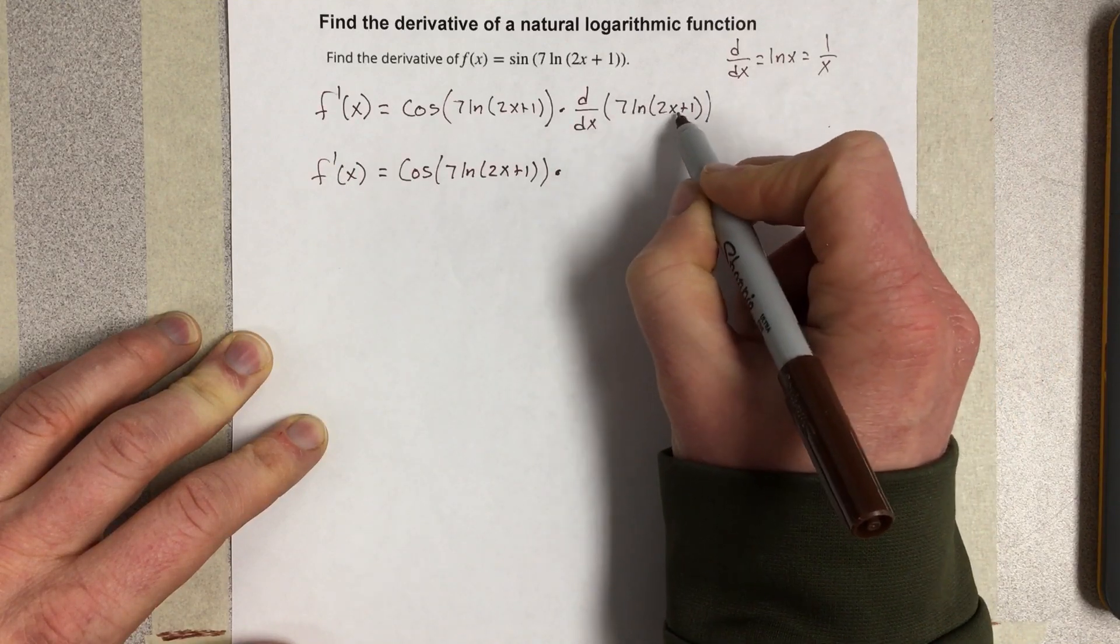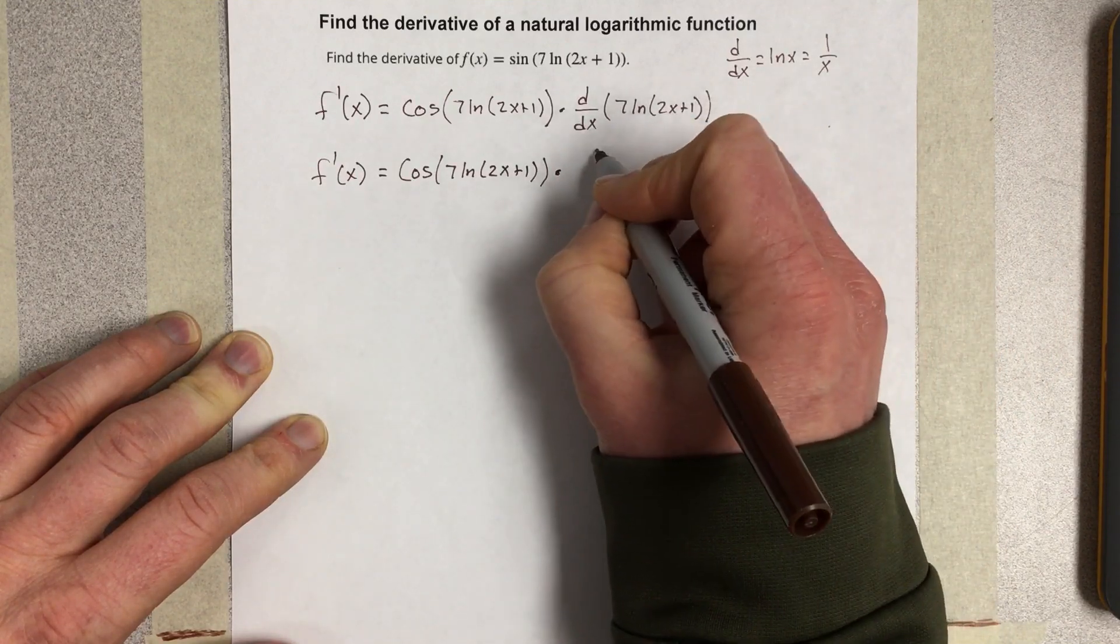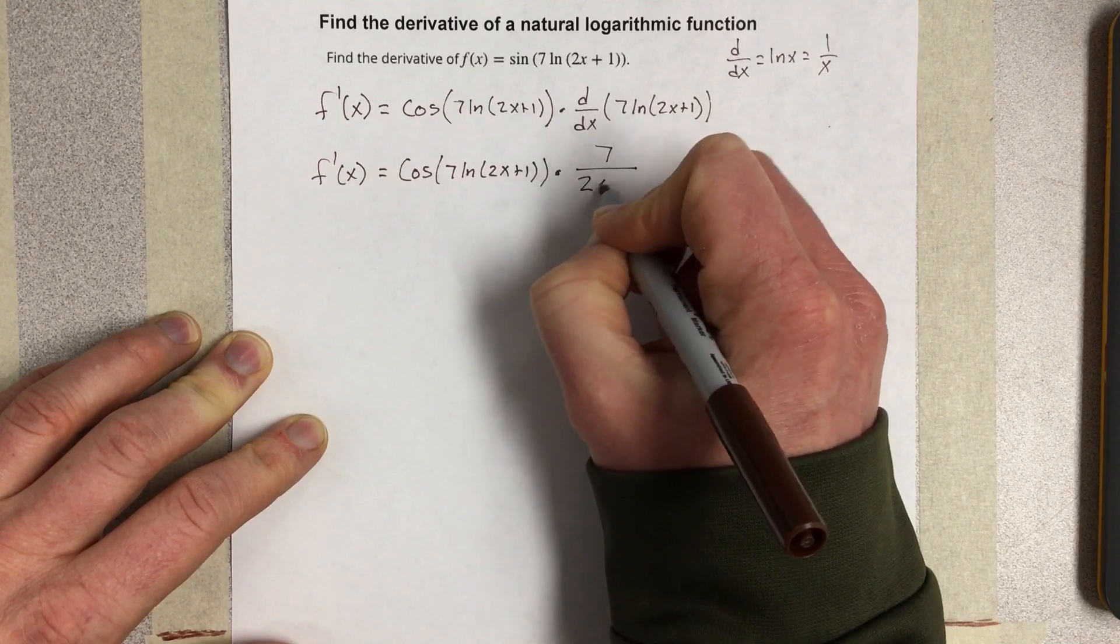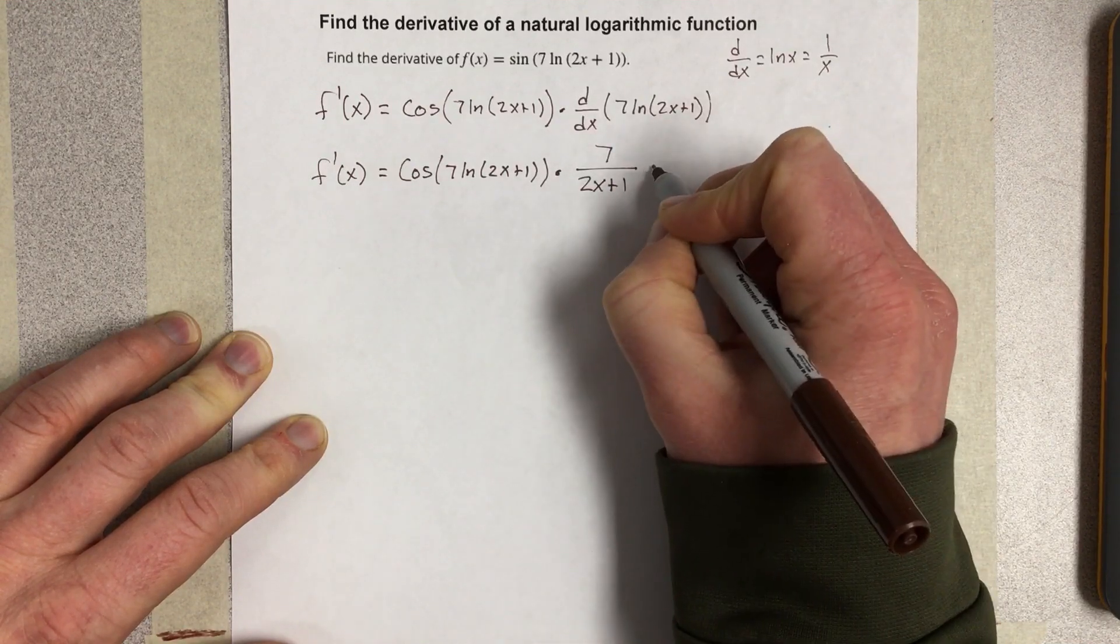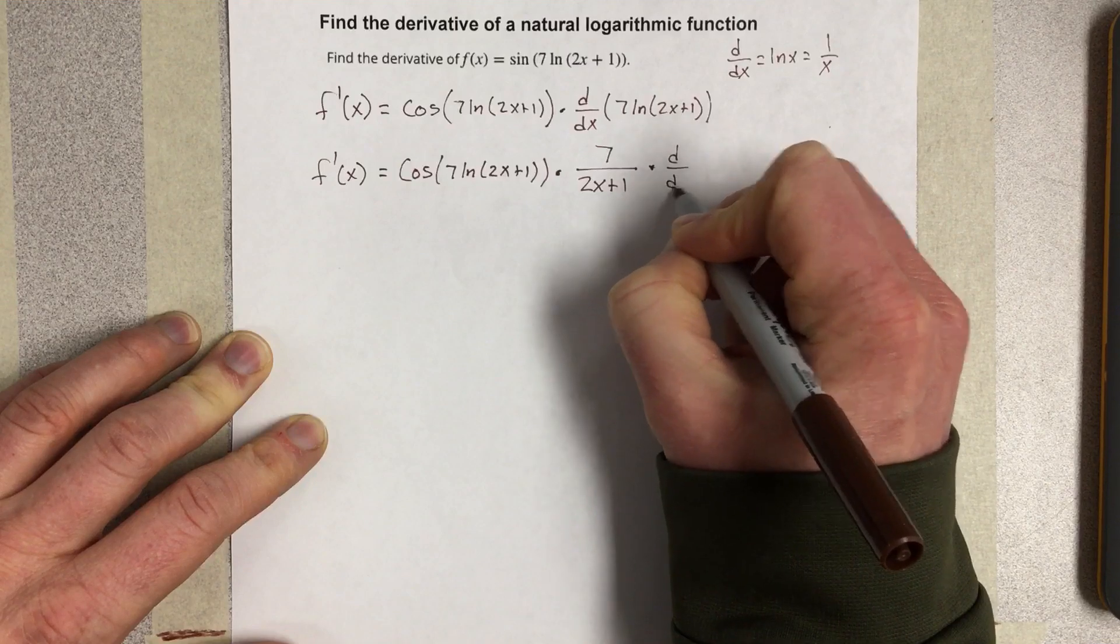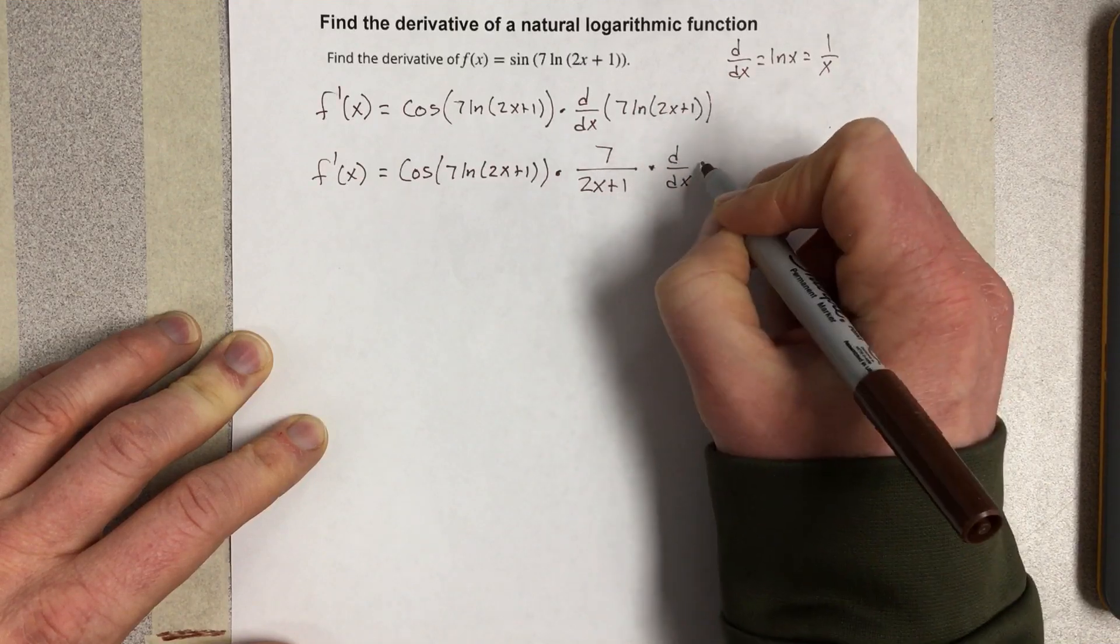I end up with 1/(2x+1). So this would actually be 7/(2x+1) times the derivative of the inside, because that's the derivative of 2x+1.